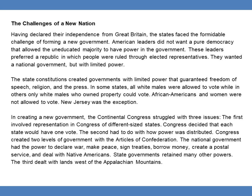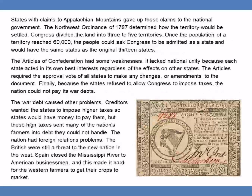The third issue dealt with land west of the Appalachian Mountains. States with claims to the Appalachian Mountains gave up those claims to the national government. The Northwest Ordinance of 1787 determined how the territory would be settled. Congress divided the land into three to five territories. Once the population of a territory reached 60,000, the people could ask Congress to be admitted as a state with the same status as the original 13 states.